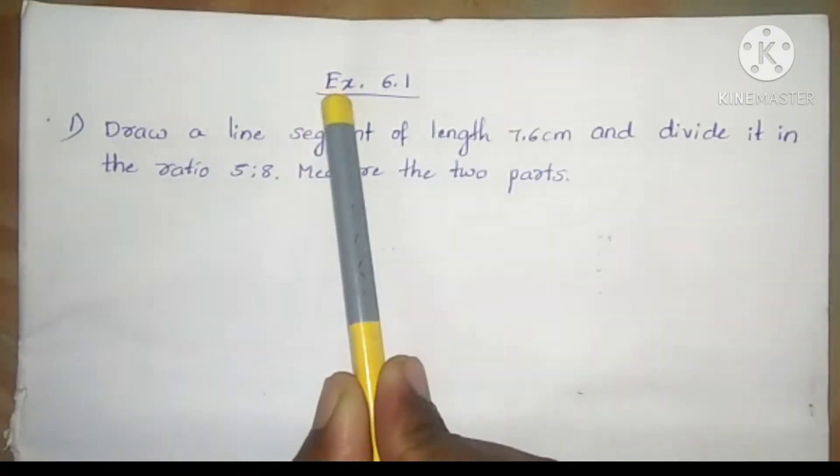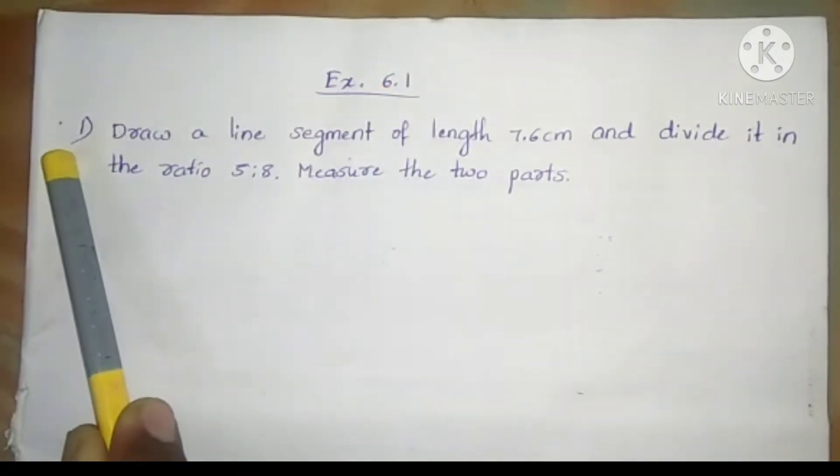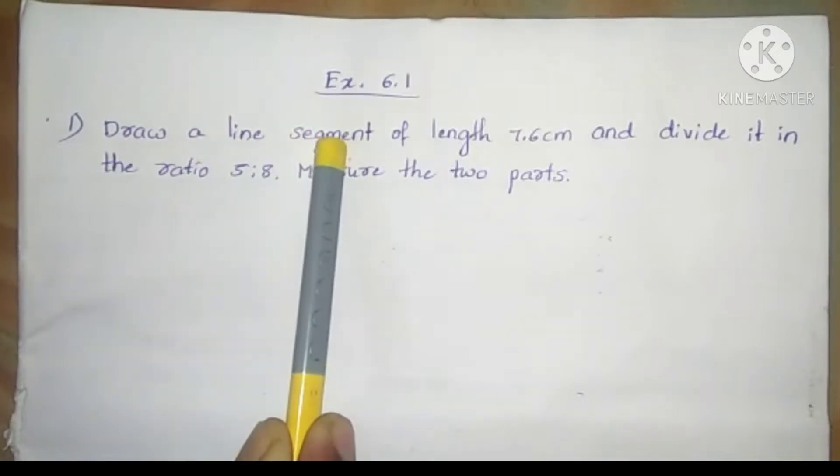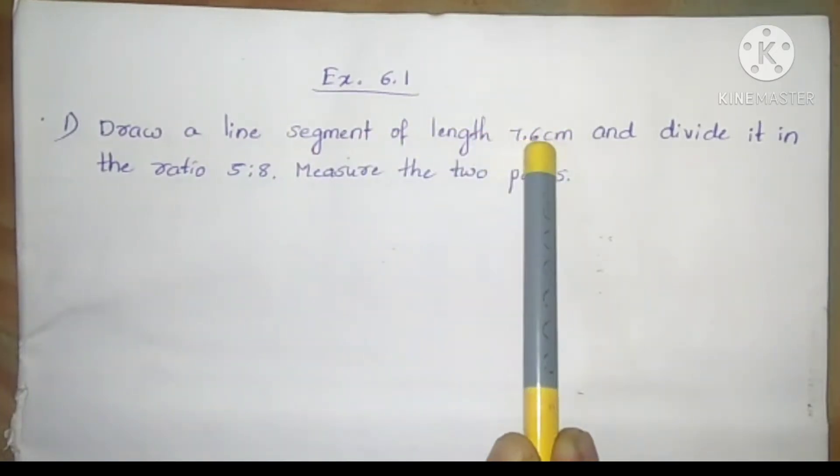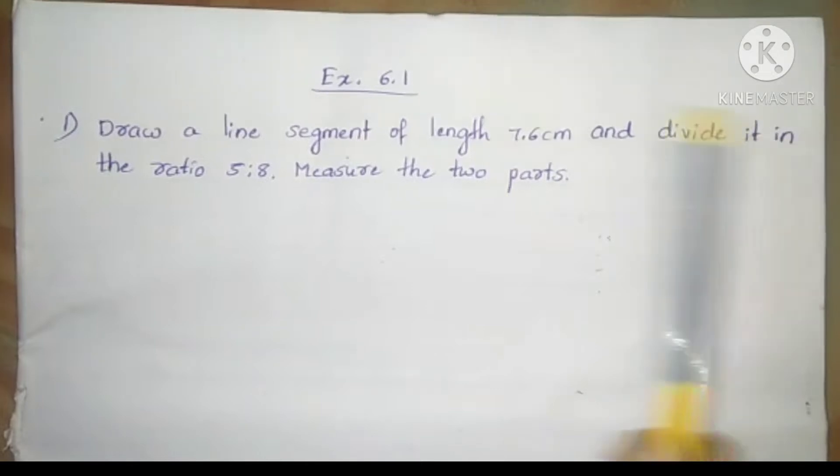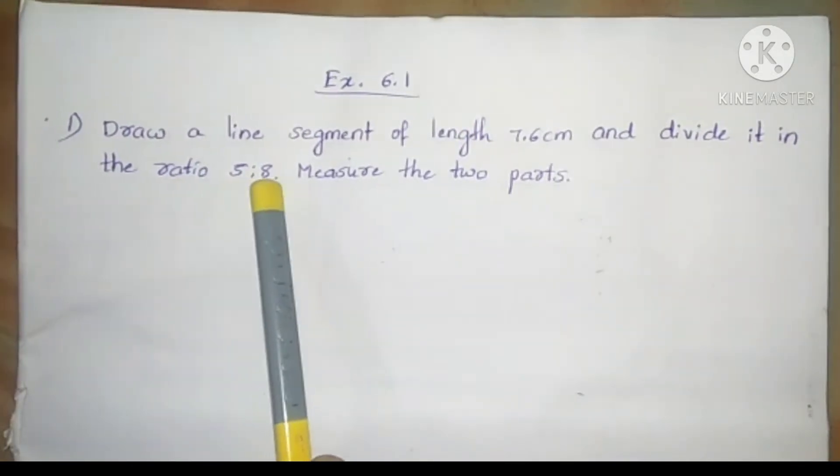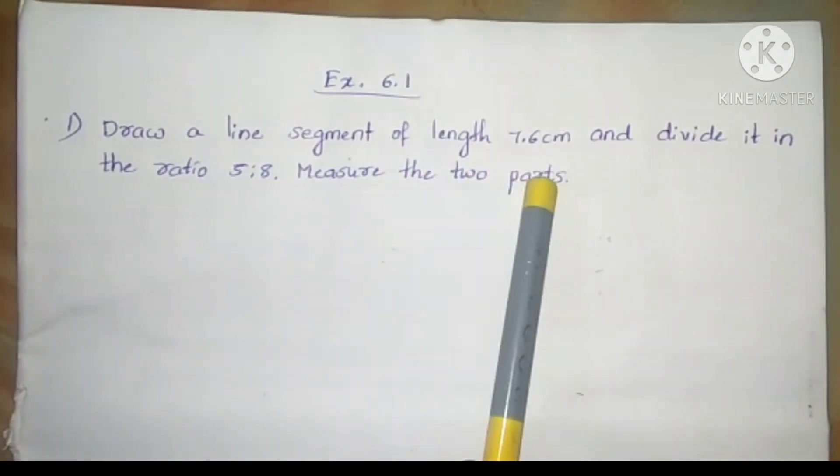In this video, we are going to solve exercise 6.1. First one, draw a line segment of length 7.6 cm and divide it in the ratio 5 to 8. Measure the two parts.